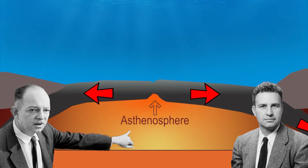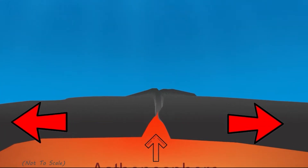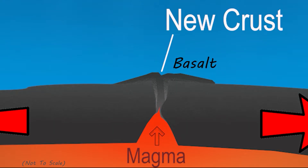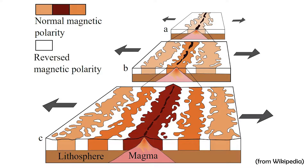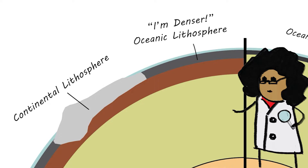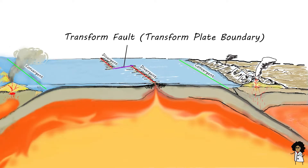Seafloor spreading helped explain continental drift — the continents move away from each other as the ocean widens by seafloor spreading between them. The theory of seafloor spreading was confirmed in 1966 by the discovery of the symmetric magnetic patterns on either side of the mid-ocean ridges. The abundance of iron in oceanic plates makes the oceanic crust like a tape recorder that remembers the history of Earth's magnetic field. Another important discovery in the 1960s was the discovery of transform faults.